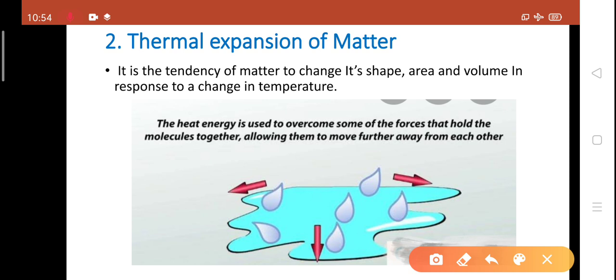The second type of change was thermal expansion of matter. Thermal expansion means it is the tendency of matter to change its shape, area and volume in response to a change in temperature.